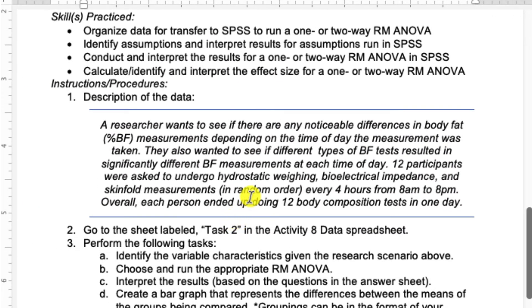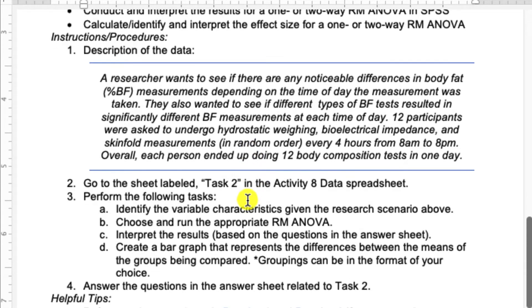So you'll choose which ANOVA is appropriate for that data set, and then answer the questions on the answer sheet. You will be creating a bar graph that represents the differences between the means of the groups being compared. You can pick the groupings that you want, but it's pretty similar to how we've done our comparable bar graphs in the past. Just make sure that you include error bars on all of your groups. That seems to be the one thing that people usually forget.